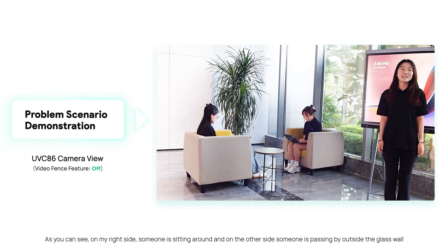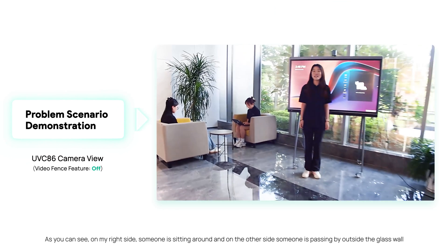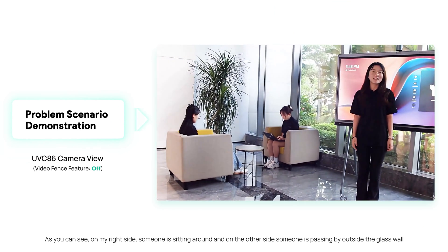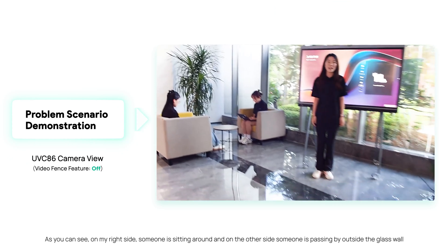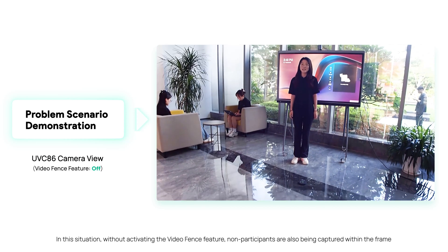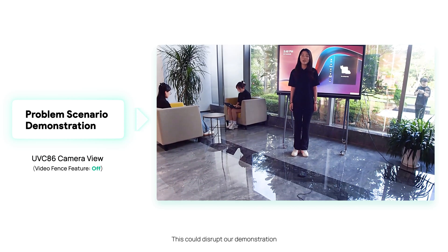As you can see, on my right side someone is sitting around, and on the other side someone is passing by outside the glass wall. In this situation, without activating the video fence feature, non-participants are also being captured within the frame. This could disrupt our demonstration.